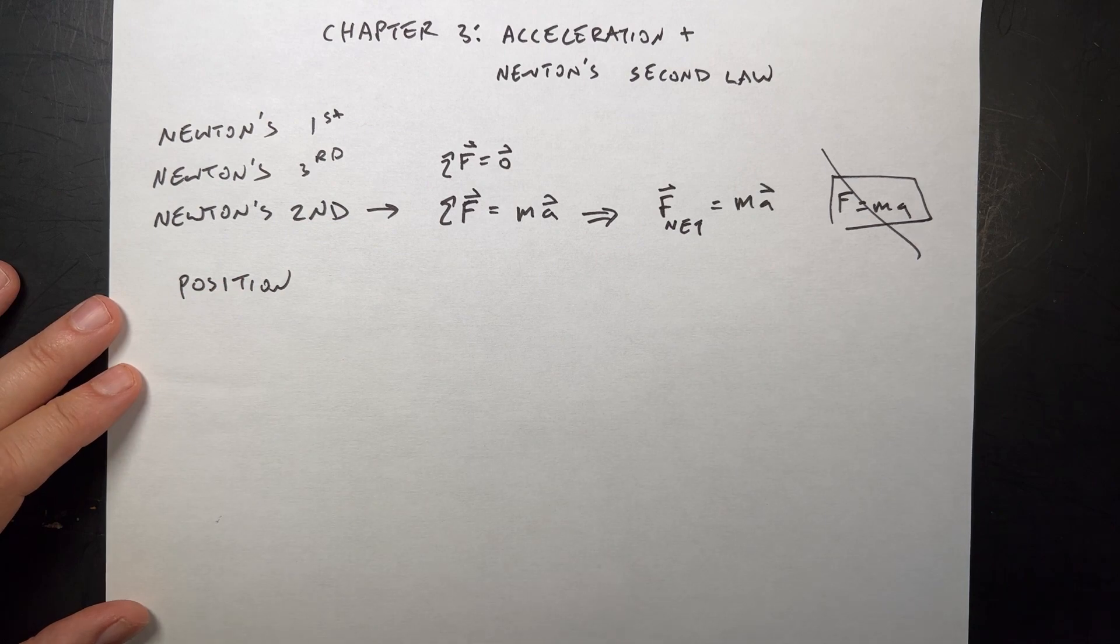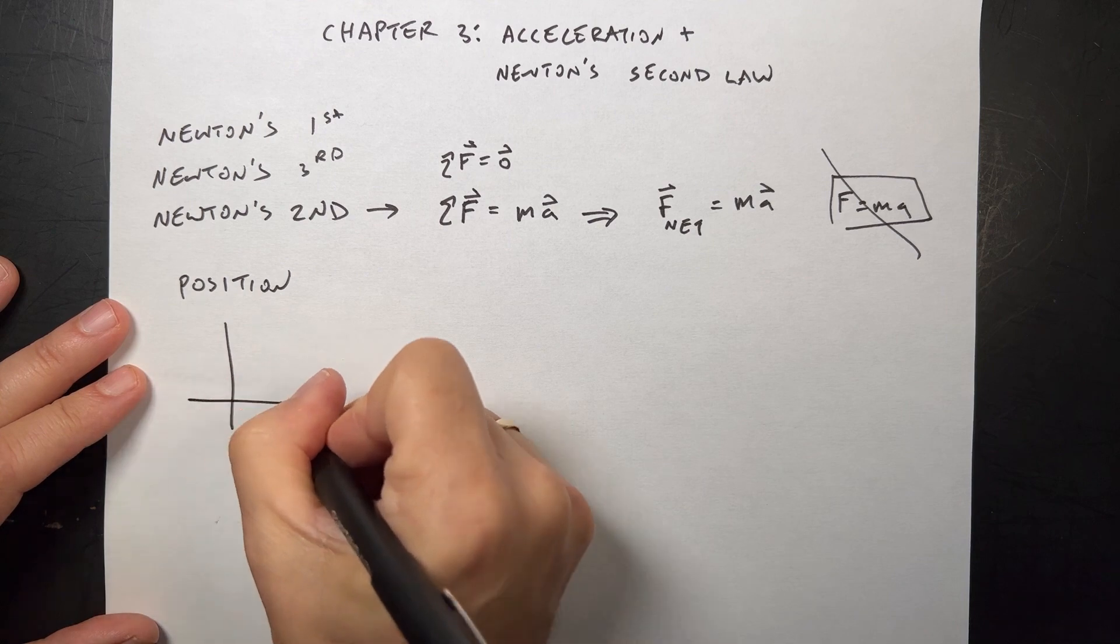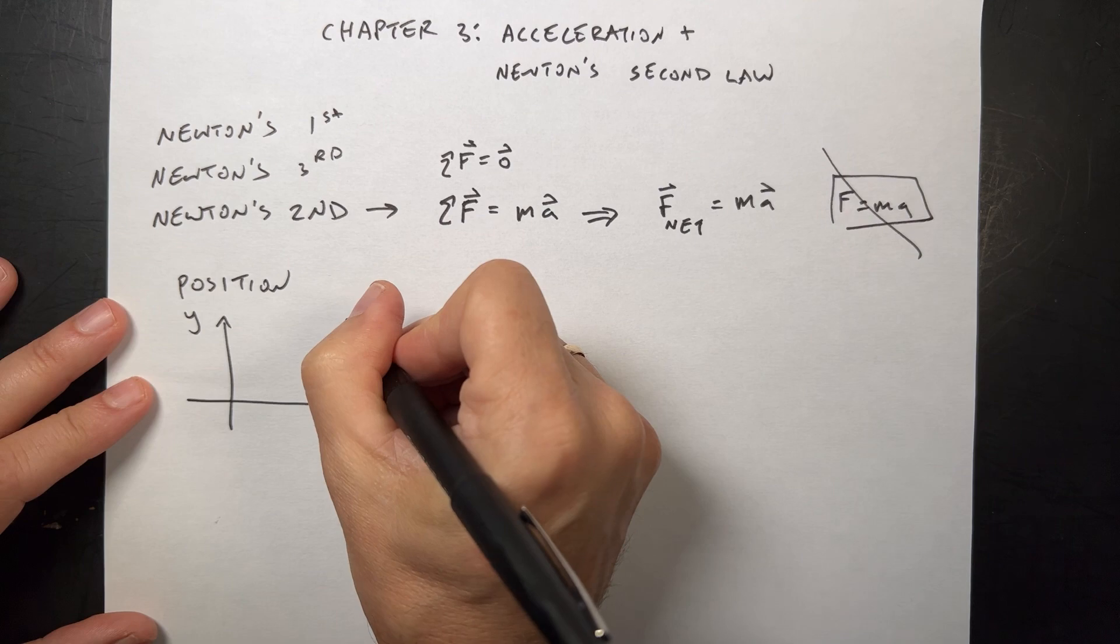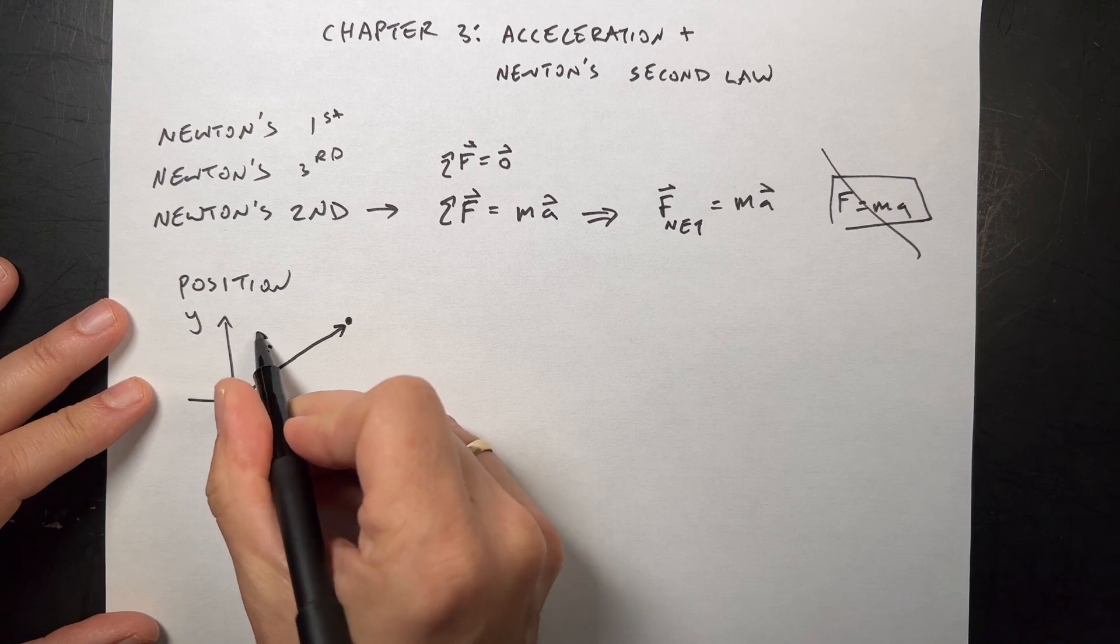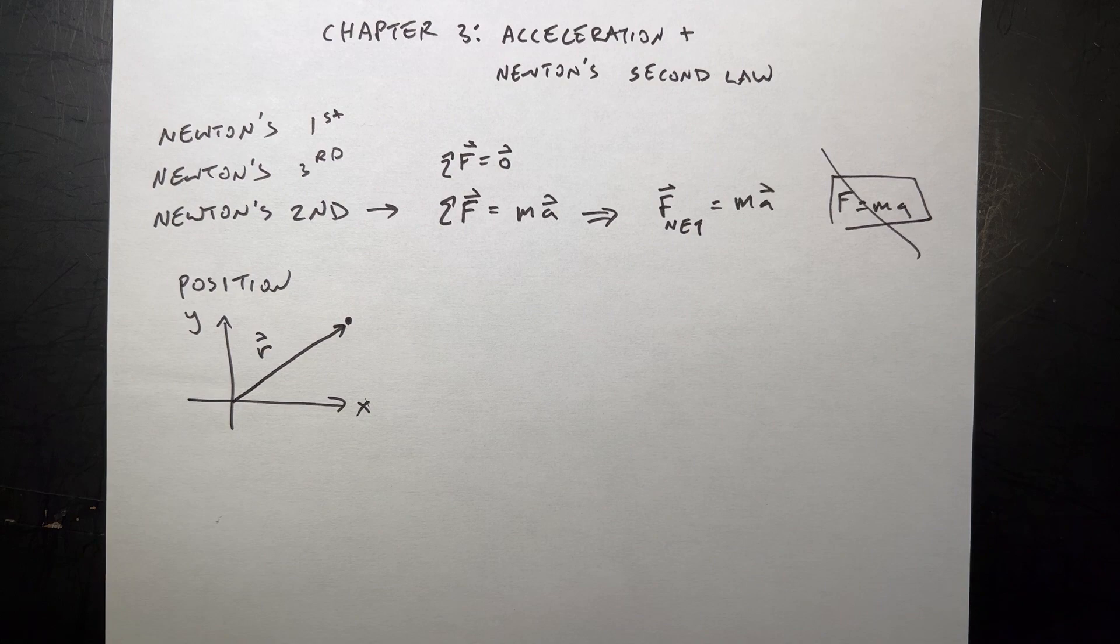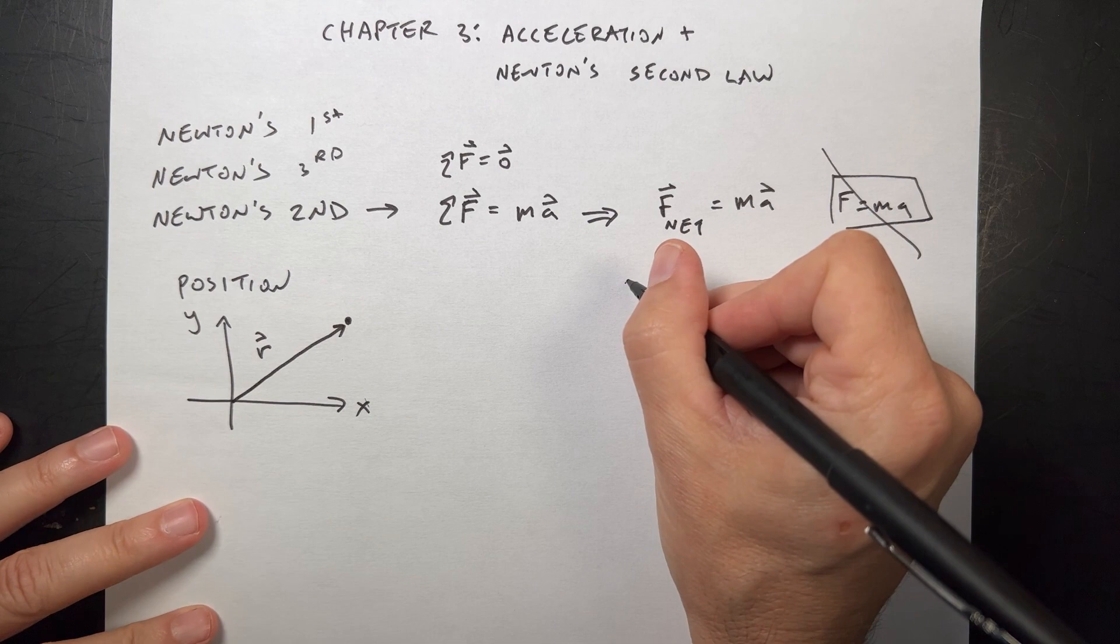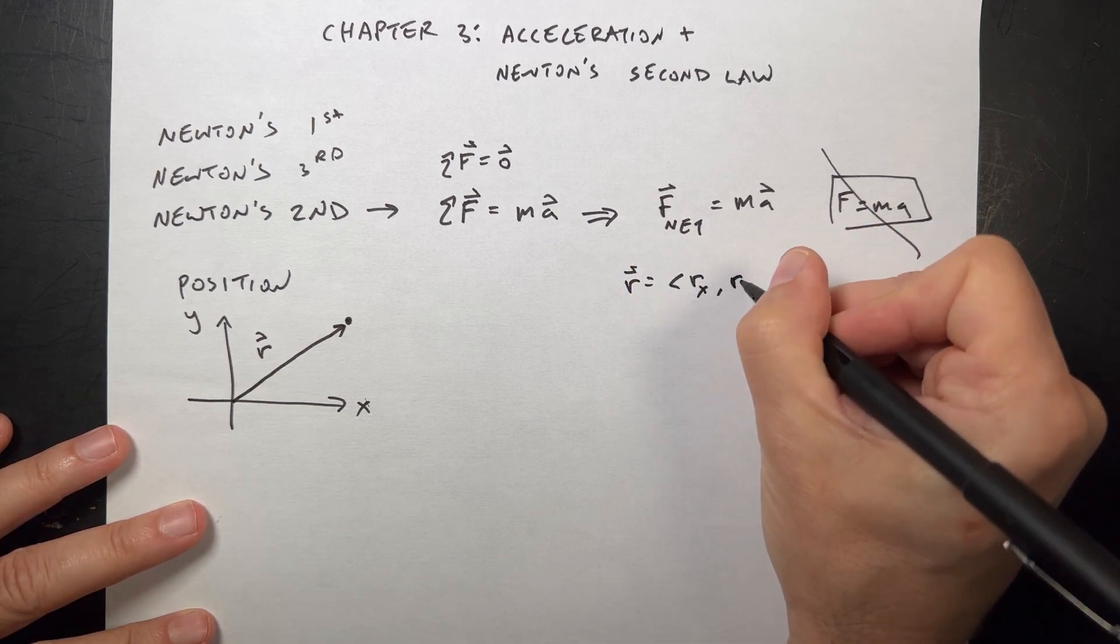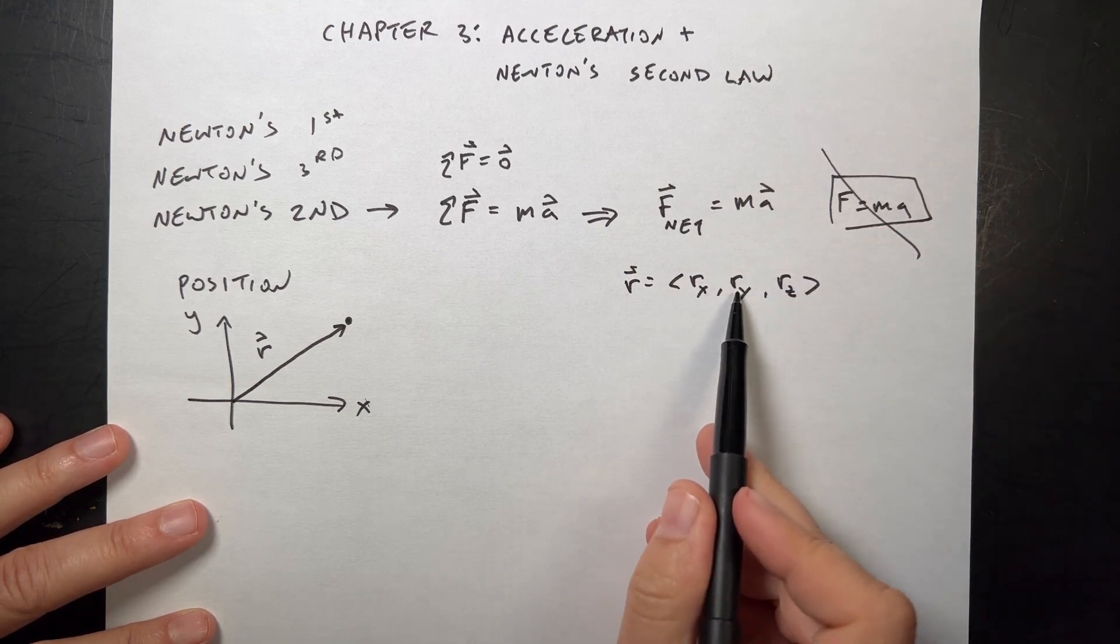Position is the vector location of an object. We use the symbol R for this. If I have an X and a Y axis, and a Z axis too, and I have some object right here, I can define its position with the vector R. It has both an X coordinate and a Y coordinate.